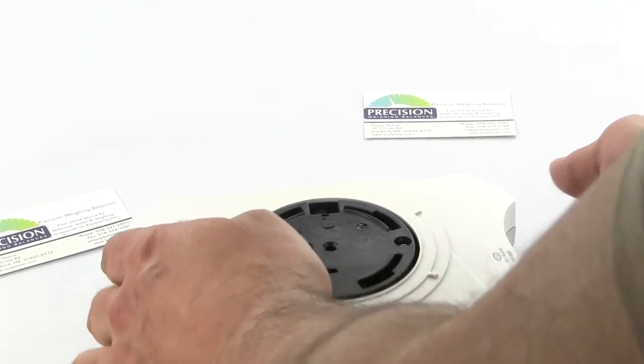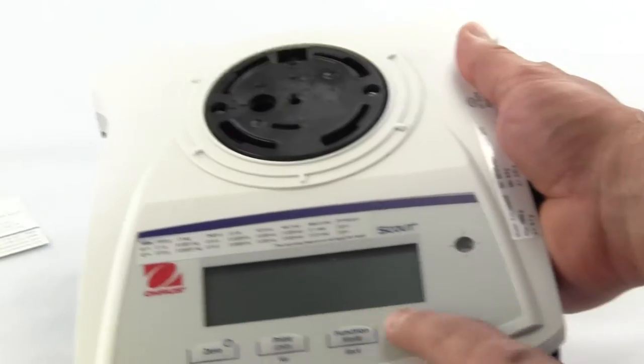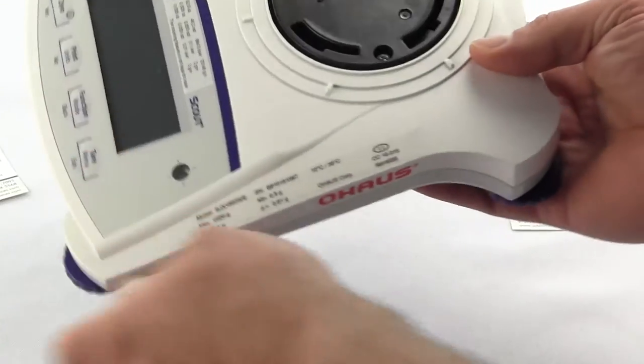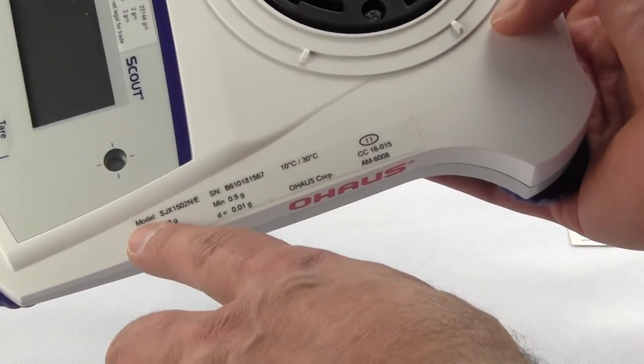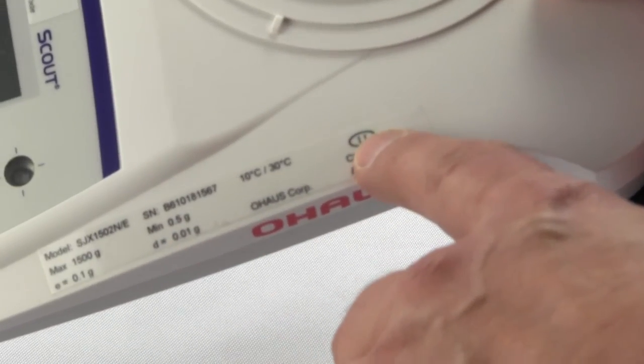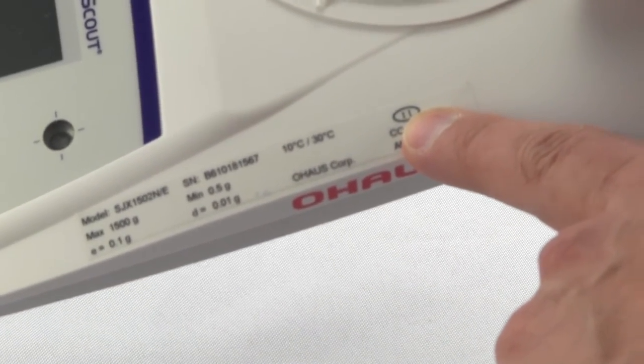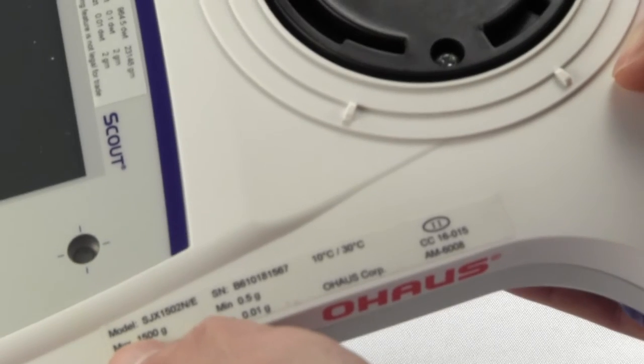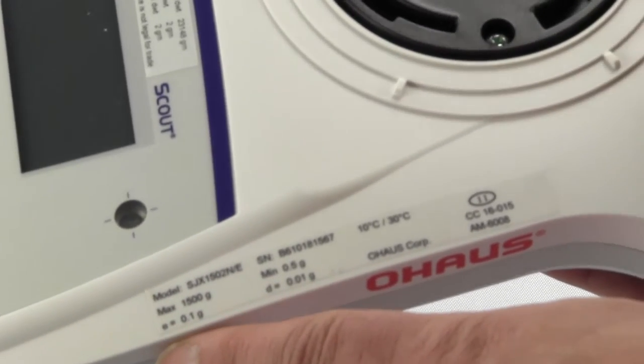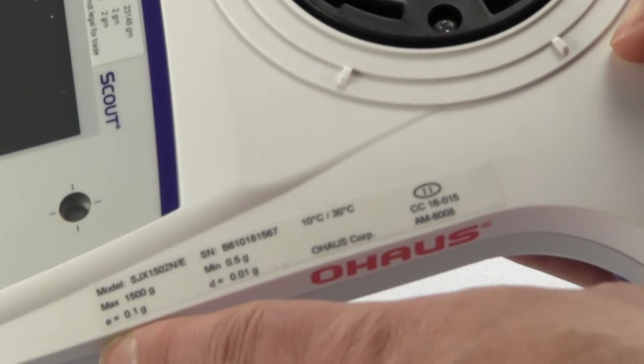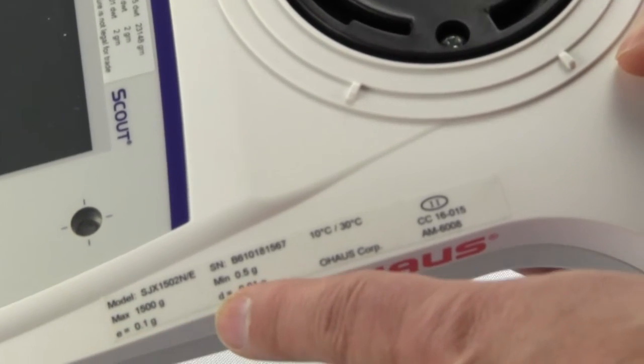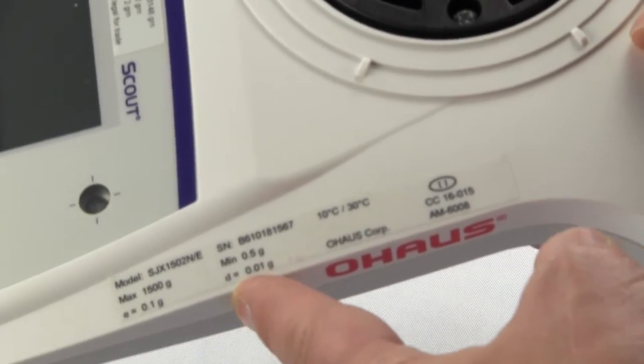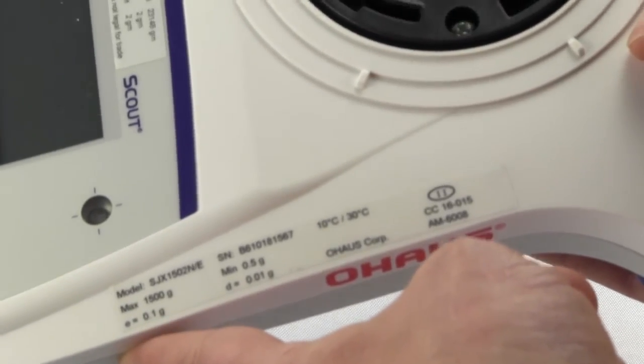To assemble the scale, let's talk about it. You have basically just four tactile keypads, nice and simple. The scale's legal for trade - you look here, gives you the model number, the serial number. The II with the circle means that it's legal for trade, class II balance, maximum capacity 1200 grams. The 'e' which is the verified is 0.1 gram, and the 'd' which is the division is 0.01. So this scale reads to a hundredth of a gram but it's legal for trade to a tenth of a gram.